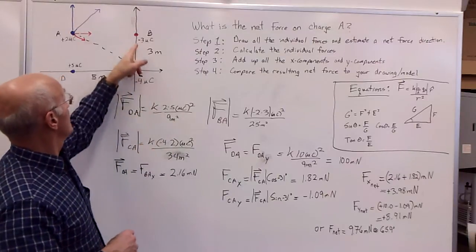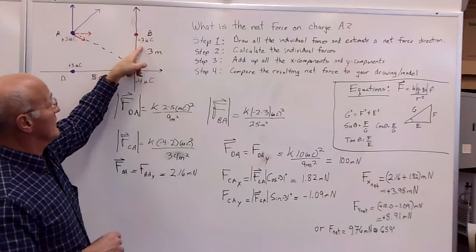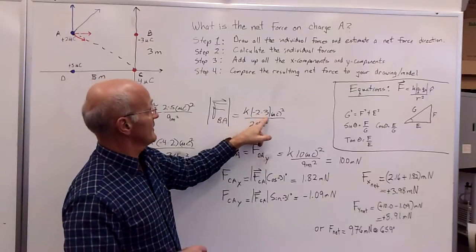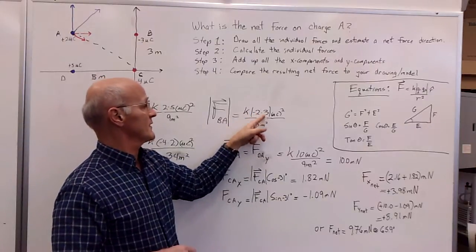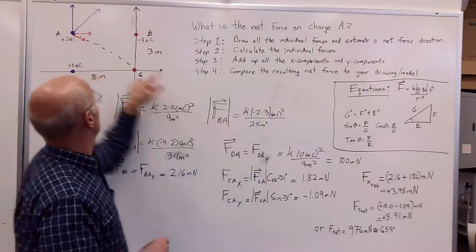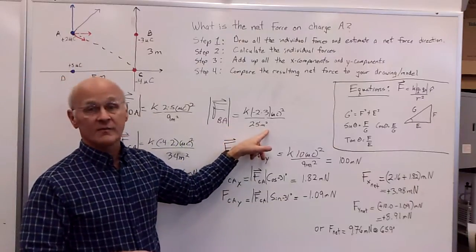Then I looked at the force on the charge due to the B charge here, the negative 3 microcoulombs, so that's where I get negative now, 2 times 3, and so 2 times 3, when it's negative, absolute value will give us a value of 6 in the end, and the distance between them is 5 meters, so 5 meters squared is 25 meters squared.